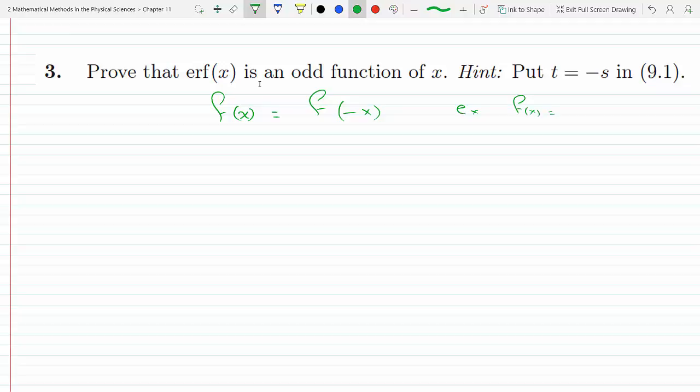Actually, equal minus f of minus x. An example of that would be f of x equals x cubed. If these two are the same, then the function would be considered an odd function, meaning it would be symmetric with respect to the origin.